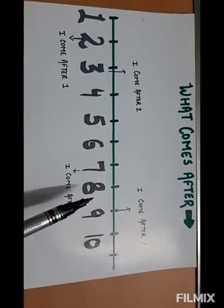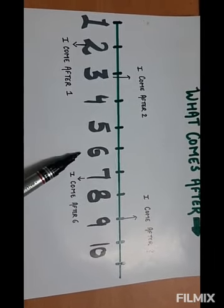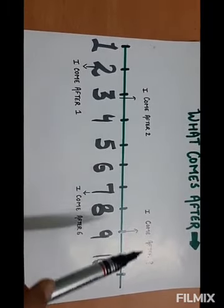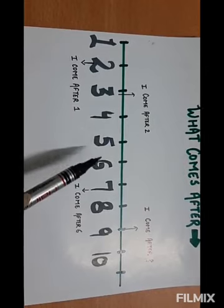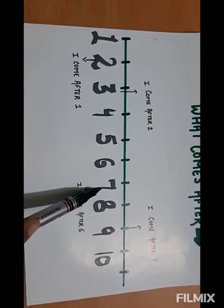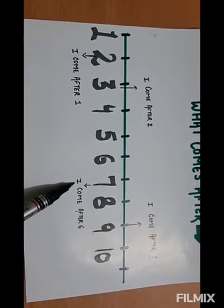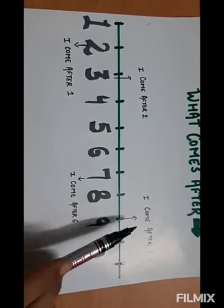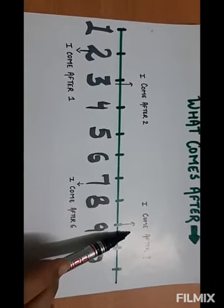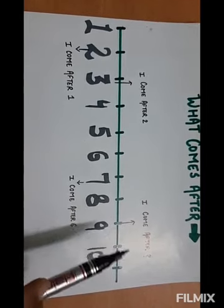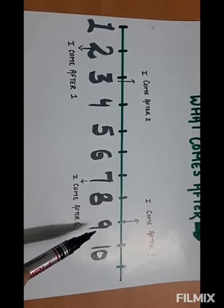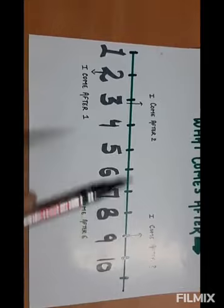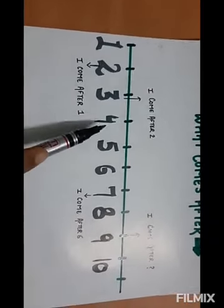What comes after six? Seven. You have to always move in the right direction. Six comes after five, seven comes after six. Now nine is asking: I come after which number? Eight — so nine comes after eight.